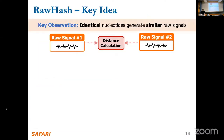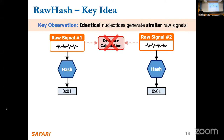The key observation in RawHash is that identical nucleotides may have different raw signals. Although they provide the same content in terms of nucleotides, their raw signals vary because of noise from the nanopore sequencer. One idea to identify similarities is to compute the distance between raw signals — for example, Euclidean distance. However, this becomes extremely costly, especially for large genomes. Our idea is instead to generate hash values from raw signals and quickly match these hash values to identify similarity.